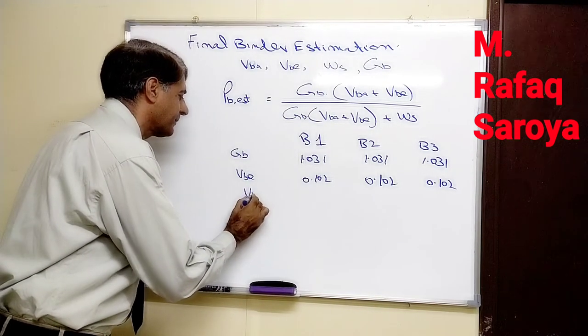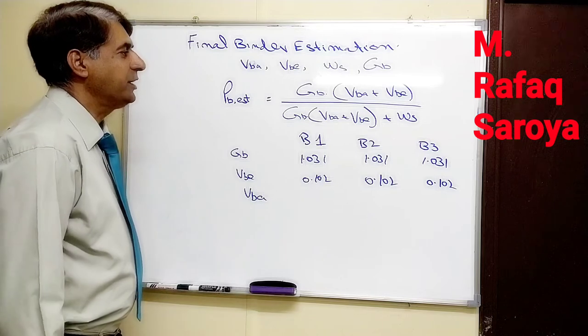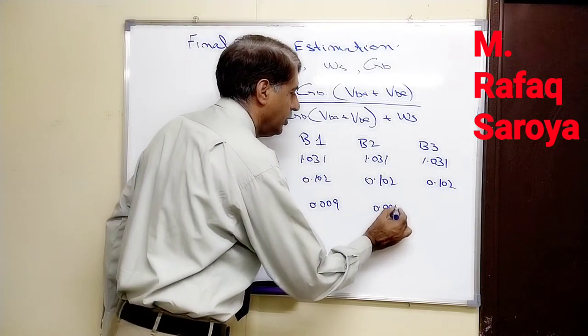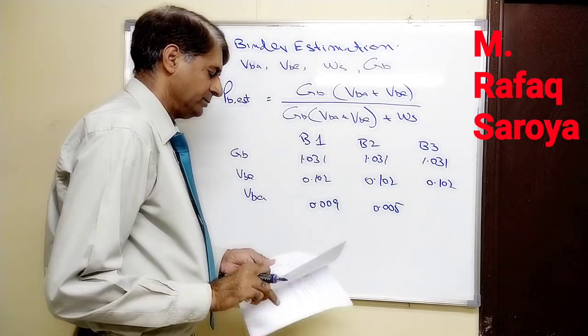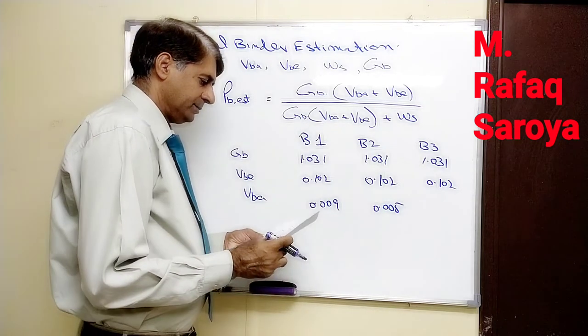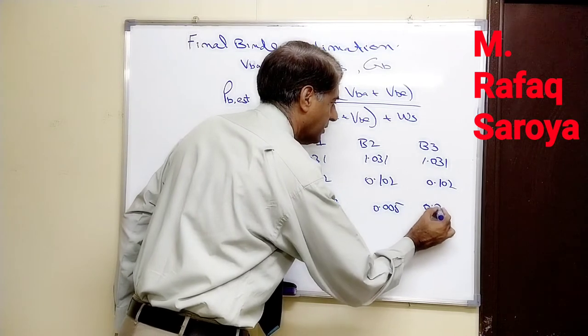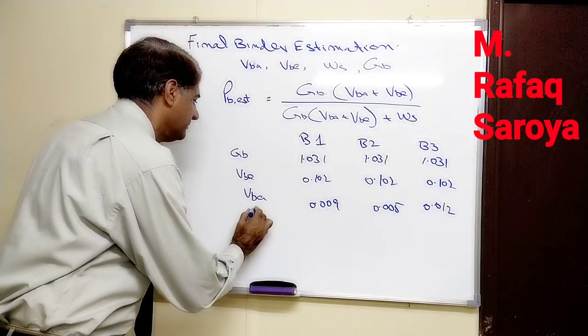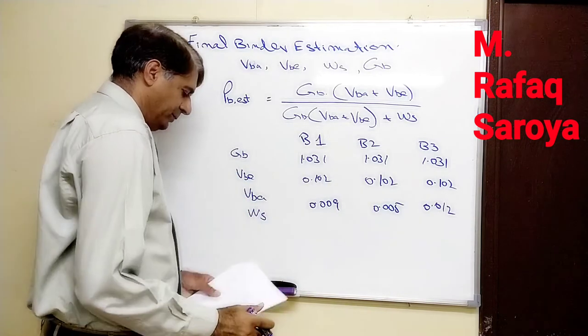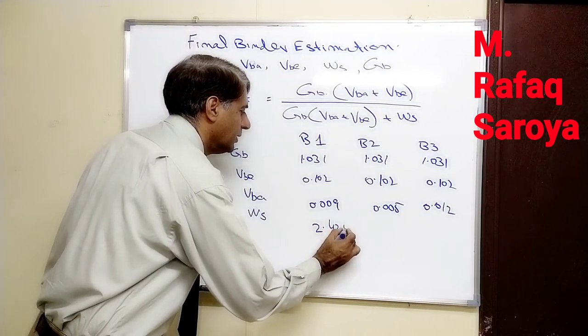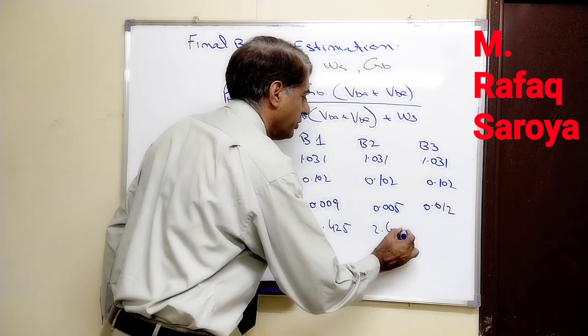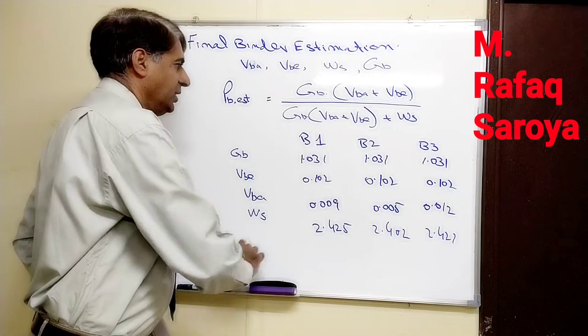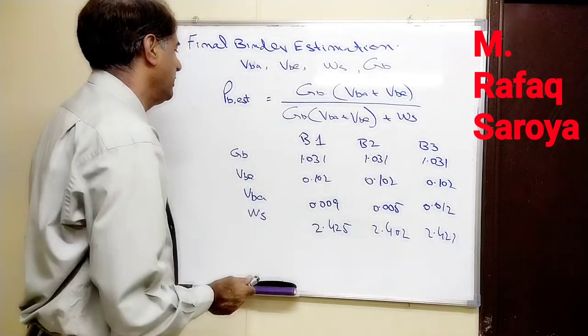The reason that this VBA is going to change is because we had calculated for blend one its value was 0.0905, for blend two 0.012. Now for WS: 2.402, 2.402, and 2.421. Whatever values we had calculated in my previous video are tabulated here.